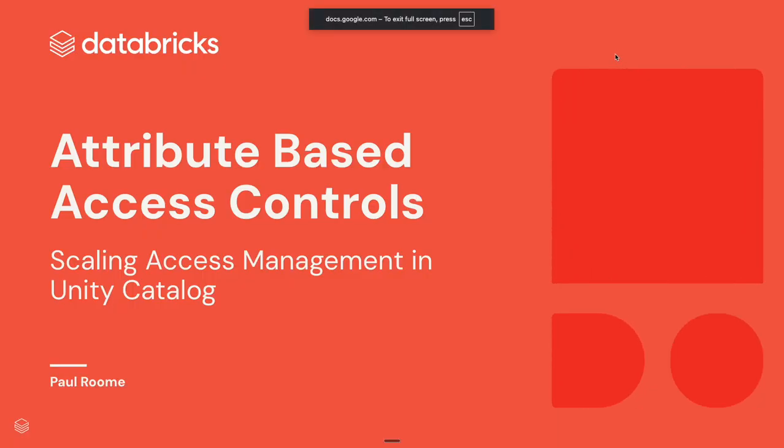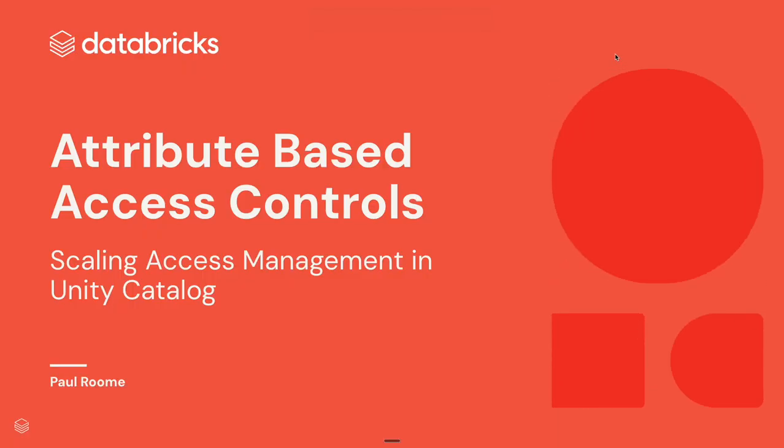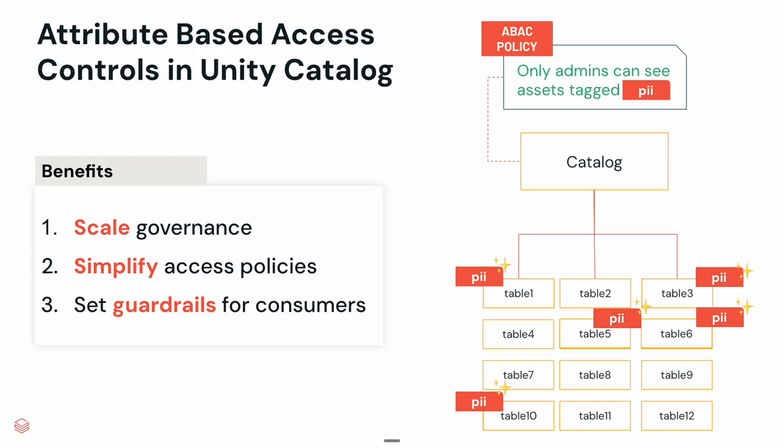We're going to take a look at a demo of attribute-based access controls in Unity Catalog. This is going to help me scale out my governance practice over hundreds of thousands of assets that I might have in my lakehouse, while simplifying authoring of access policies and ongoing maintenance of them, and making sure that I have guardrails so consumers use data in a safe way. So let's go ahead and have a look.